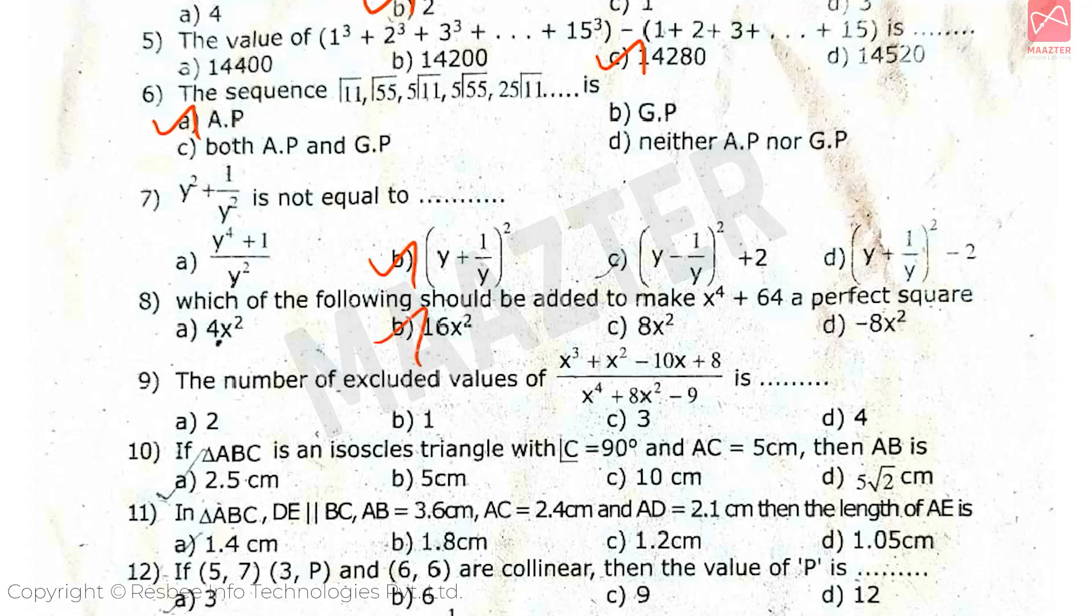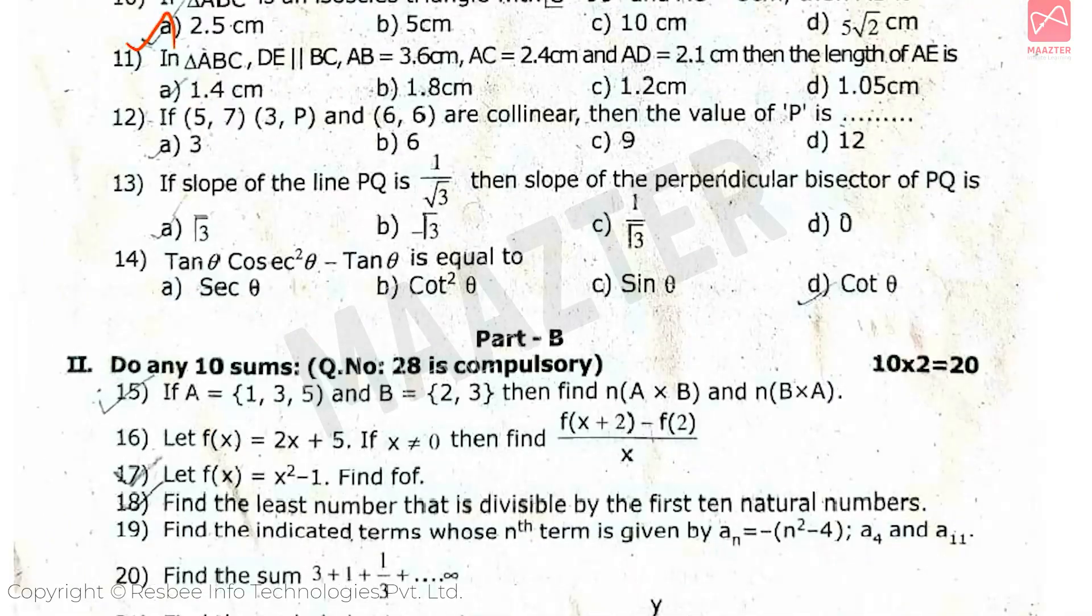Next, the number of excluded values of (x³ + x² - 10x + 8)/(x⁴ + 8x² - 9) is, answer is Option A. Next, if triangle ABC is an isosceles triangle with angle C = 90° and AC = 5cm, then AB is, answer is Option A.